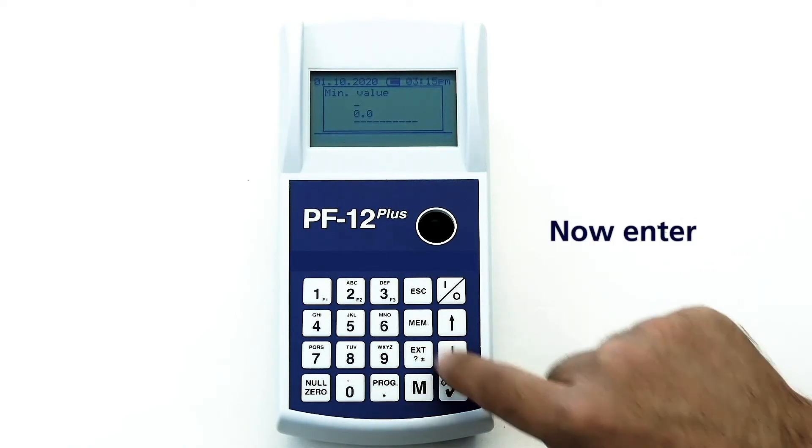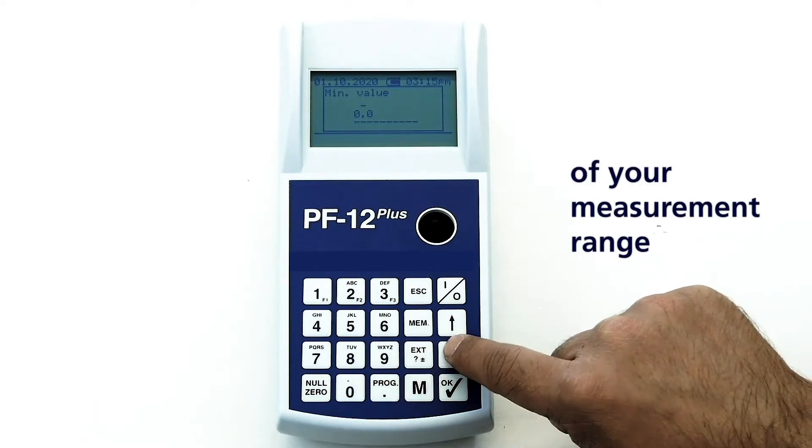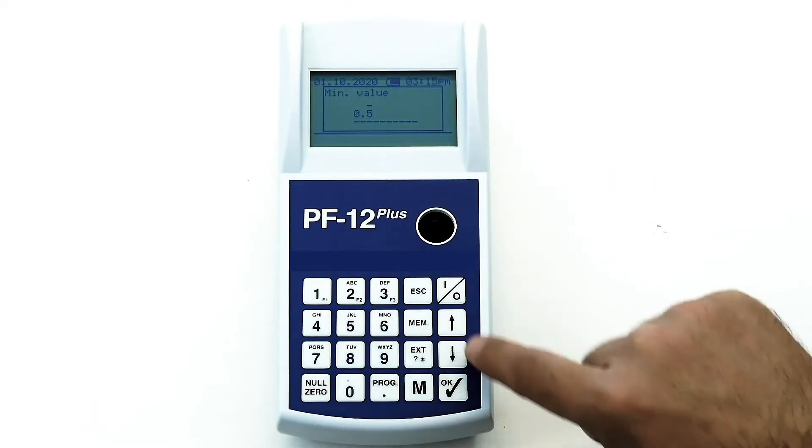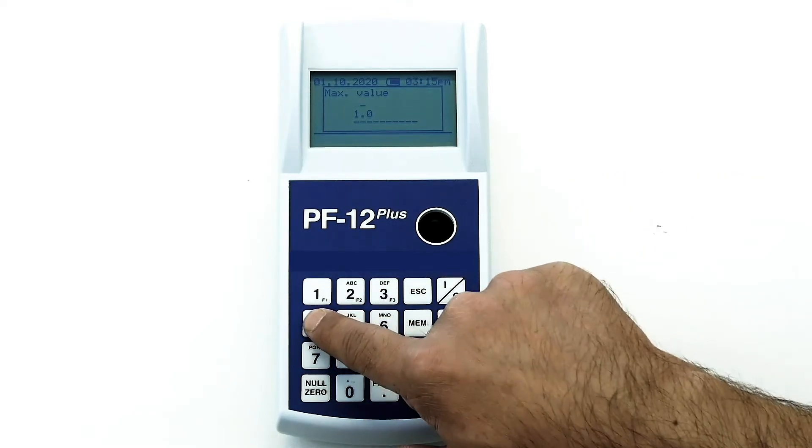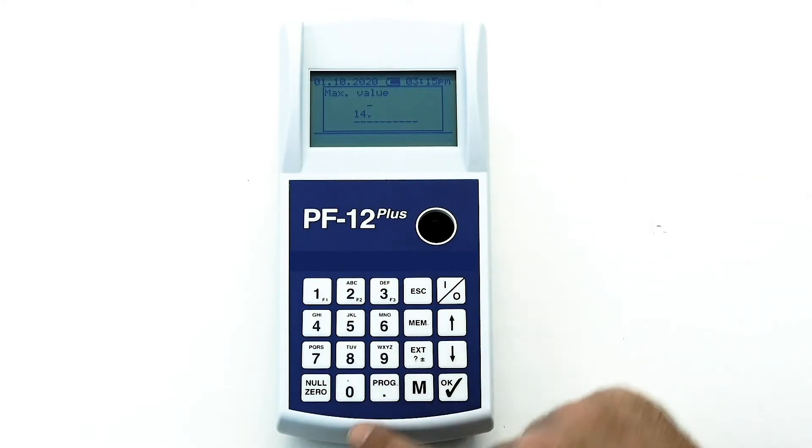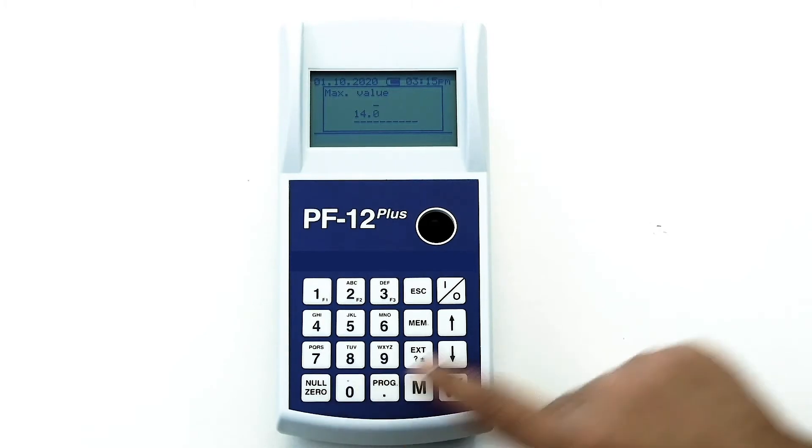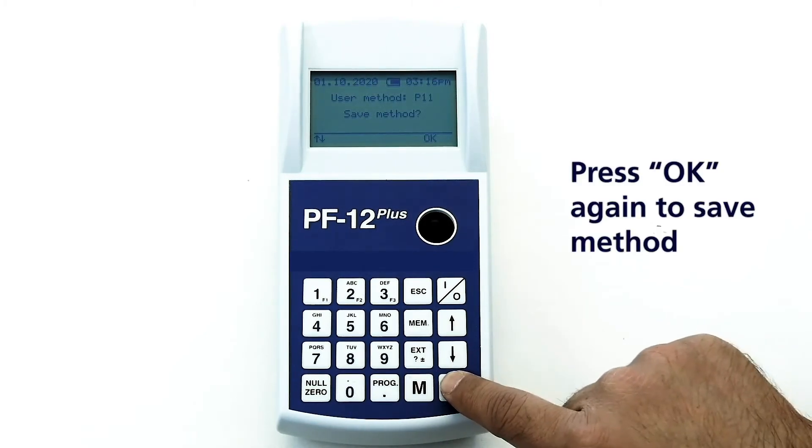Now enter the minimum value of your measurement range. Enter maximum value of measurement range. Press OK. To save method press OK again.